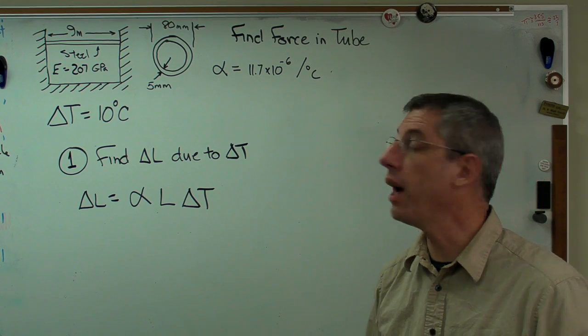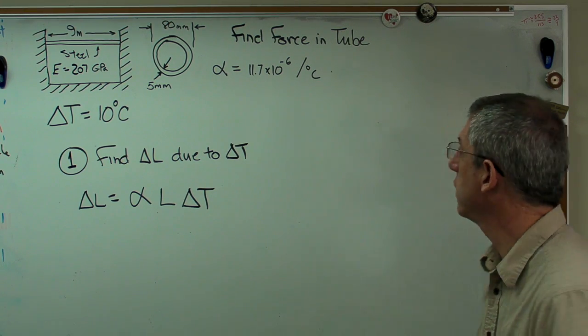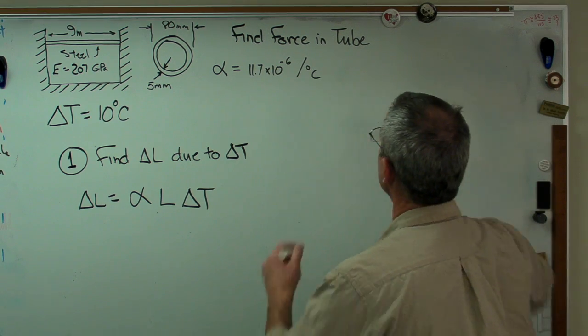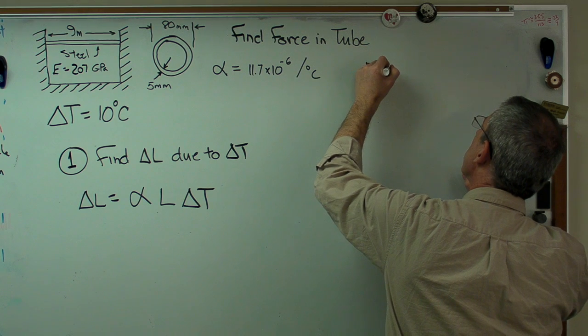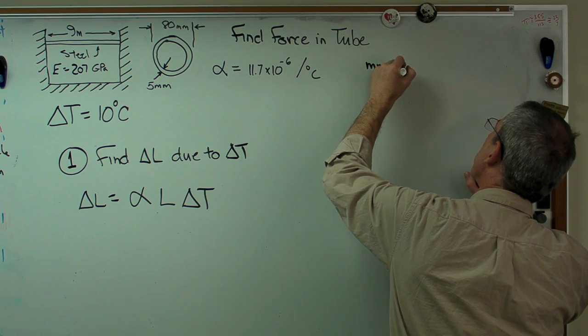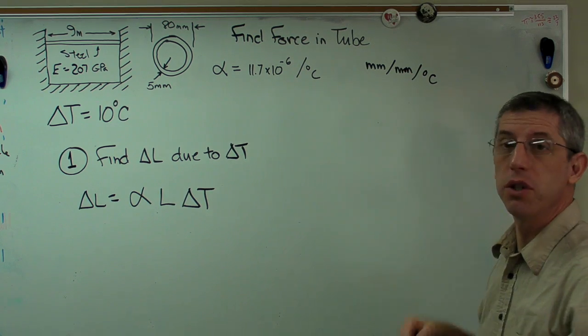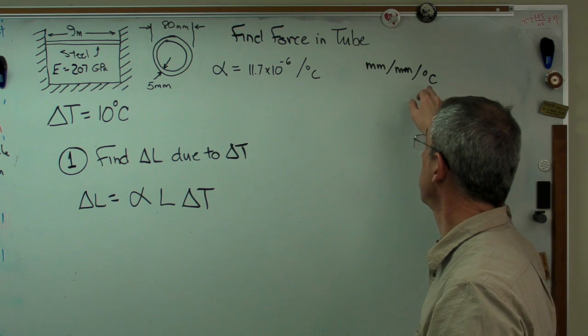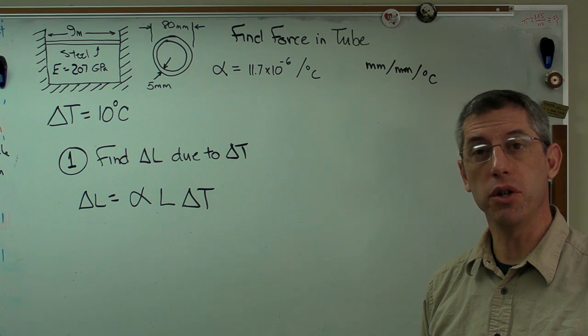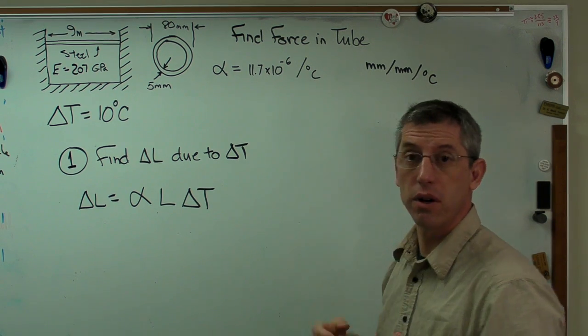In English units, it's one over degree F. In the metric system, it's one over degree C. This is not obvious at first. What it really is, it's units of length divided by units of length divided by temperature change. So it's actually a change in strain per degrees C or degree F. But strain is unitless, it's length over length. So this and this are the same thing.